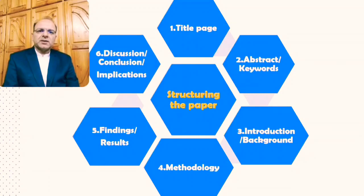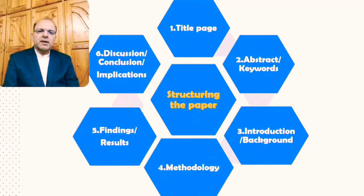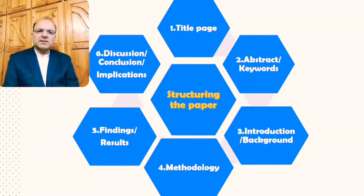The final part of the research paper is the discussion, conclusion, and implications. Discussion involves a critical discussion of our findings, and the conclusion section is where we conclude based on our findings. In some cases, recommendations or suggestions for further studies are included. After this, we also need to include a references or bibliography section, and in some cases appendices such as the research tools used.